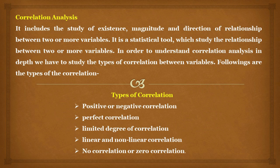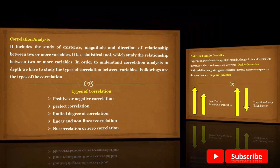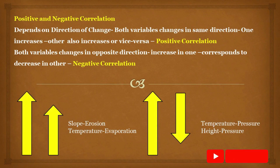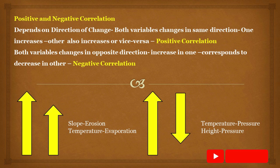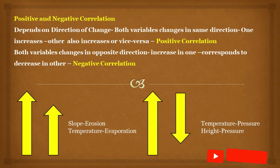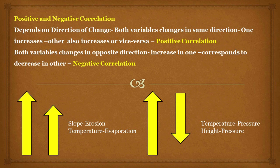One by one we are going to elaborate the types of correlation. The difference between positive and negative correlation is judged on the basis of the direction of change between two variables. If the changes in both variables are in the same direction — that is, if one variable increases then another variable will also increase — then the correlation is said to be positive. On the other hand, if the change is in the opposite direction — one variable increases while the other decreases — then it is known as negative correlation.